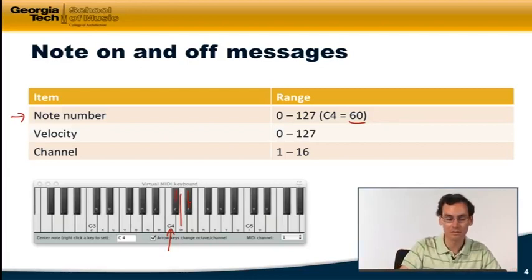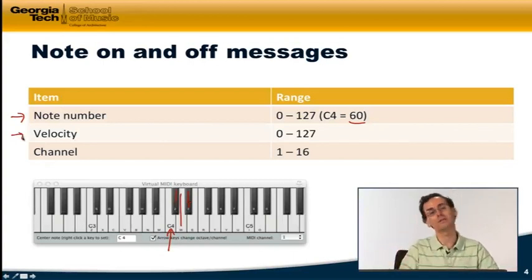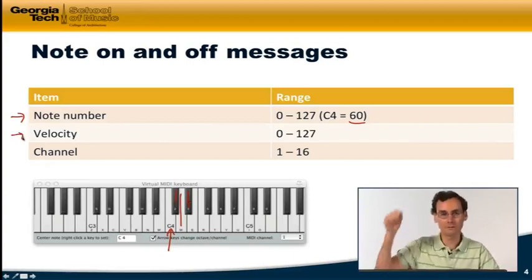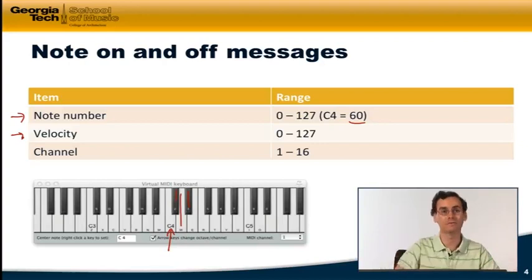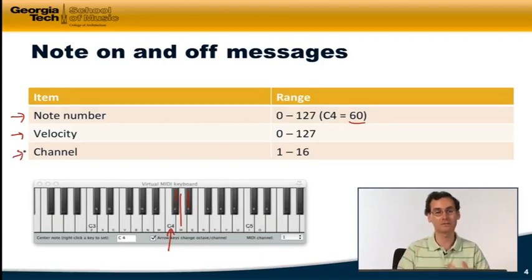Velocity is how hard we're hitting the note - like how hard we're pressing the key on the MIDI keyboard. 127 would be the hardest, 1 would be the softest. And then 0 would correspond to a note off message, because a zero, no velocity, it's like I'm lifting up the key. And then of course, what channel we're going to be on. I want to show you how this works in Reaper and let you actually see the messages coming in as I hit notes on the MIDI keyboard now.